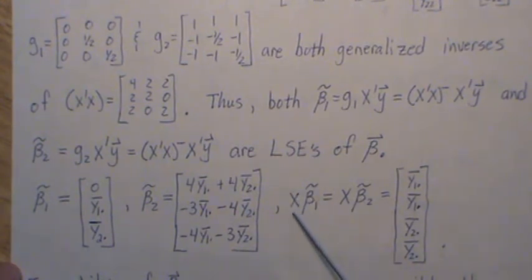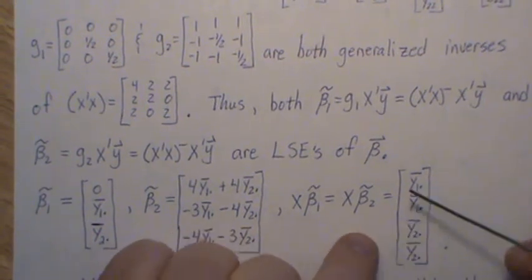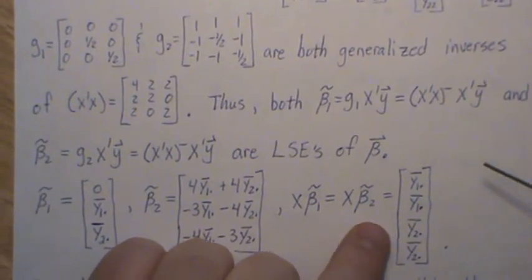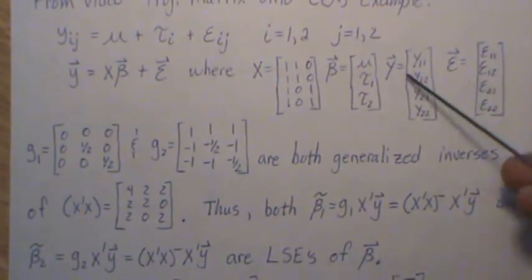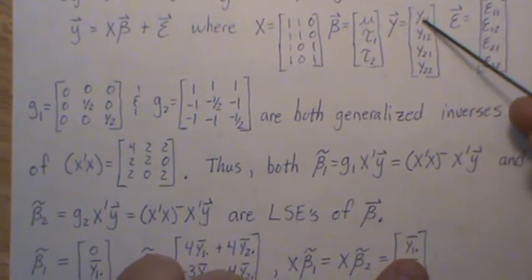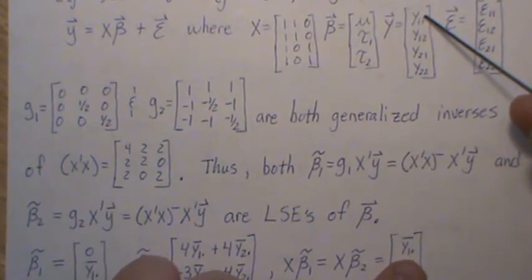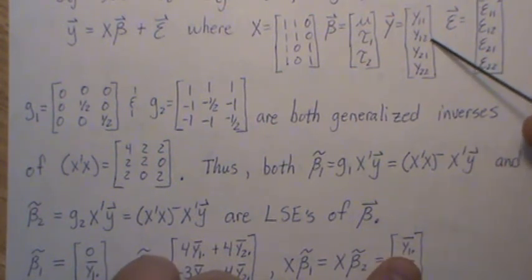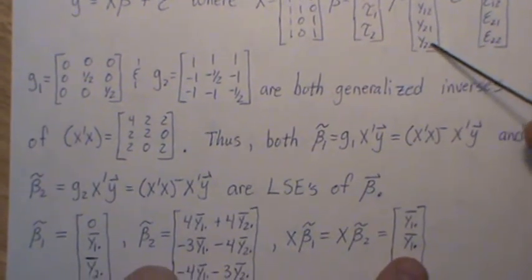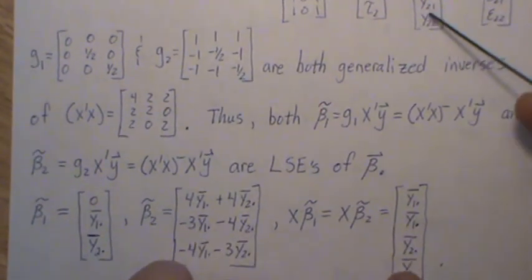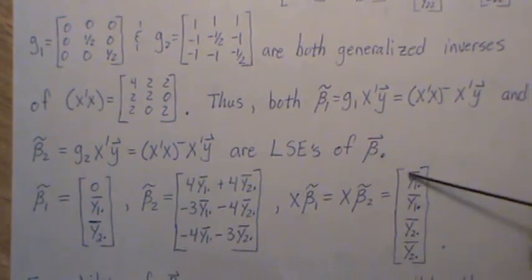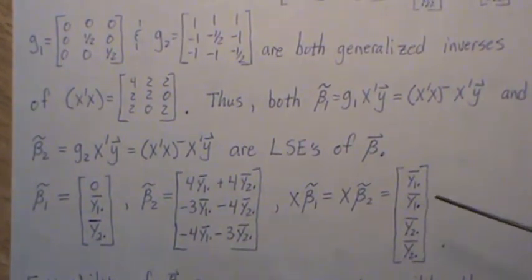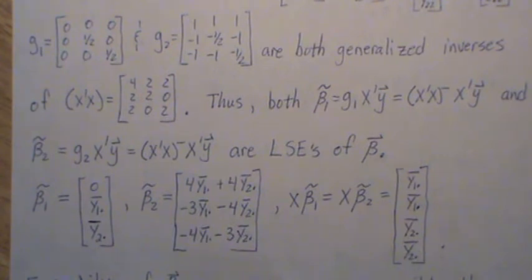So we do get a unique estimate when we pre-multiply by x, and this is the fitted model, and it makes sense. Because if we look at the y's, this observation's from group one, so what are we going to estimate it with? The group one mean. This observation's from group one, we estimate it with the group one mean. These next two are from group two, so we estimate each of those with the group two mean. So as a model, it makes sense, that that's the fitted model.